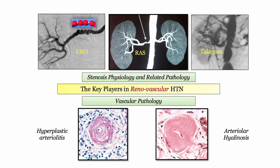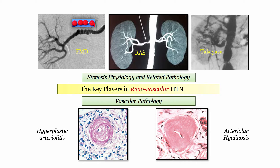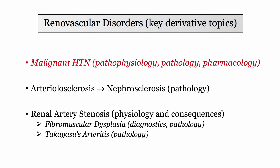When I mention renal vascular disorders, we're really talking about two sets of derivatives for the boards: those that focus on the physiology of renal hypoperfusion, and those whose primary focus is on the renal pathology. There is obvious overlap between the two, but this is how the questions will present on Step 1. In this video, we will focus on the first — malignant hypertension.